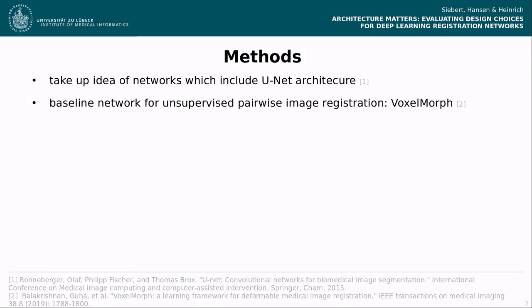We take up the idea of several registration networks which include a U-Net architecture to learn deformations, and we compare our results to the simple baseline network for unsupervised pairwise image registration, VoxelMorph. Our investigations start with a registration model that is similar in basic structure to VoxelMorph but with fewer skip connections. The model concatenates fixed and moving images at the beginning and uses sequences of convolution followed by instance normalization and leaky ReLU. The central part of the architecture consists of a U-Net-like part using two skip connections.